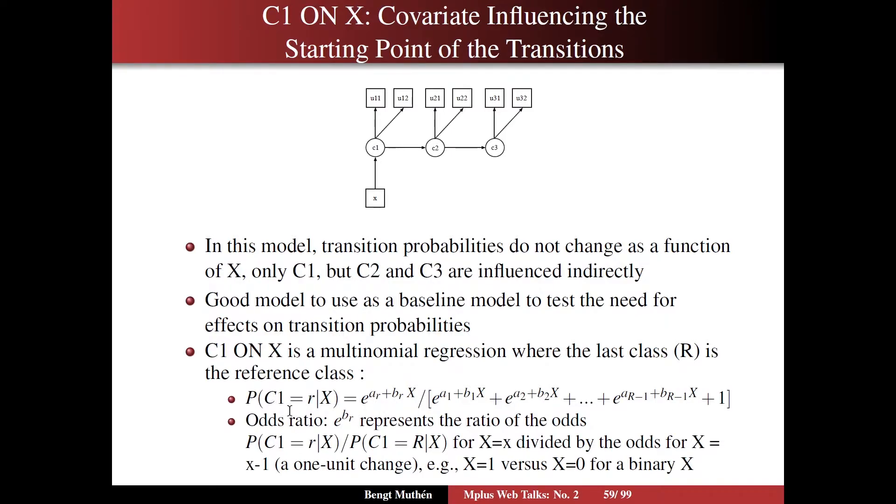So the probability that C1 is in a certain class R, lowercase r, is the exponent of the intercept plus slope times X for category R divided by those exponents for all of the different classes where the last one is 1 due to a and b both being 0 and e to the power of 0 being 1.